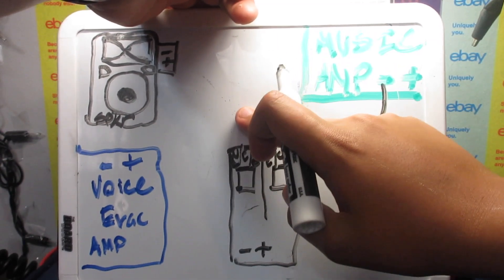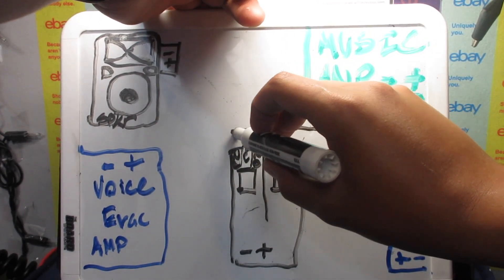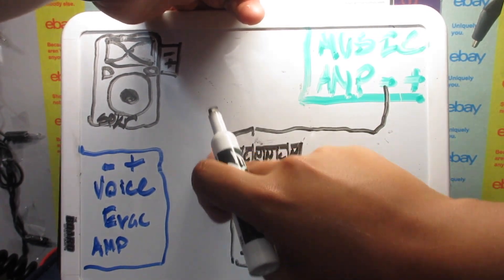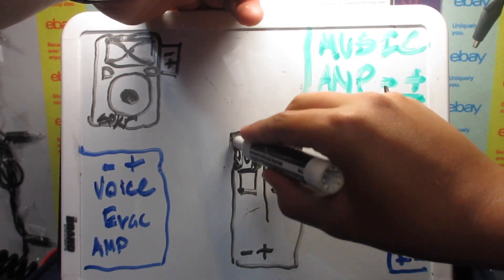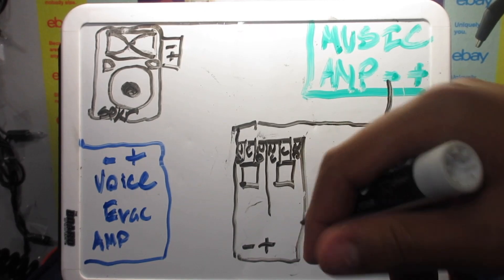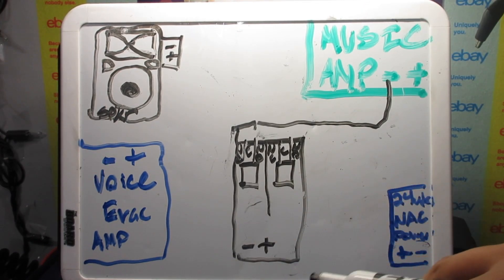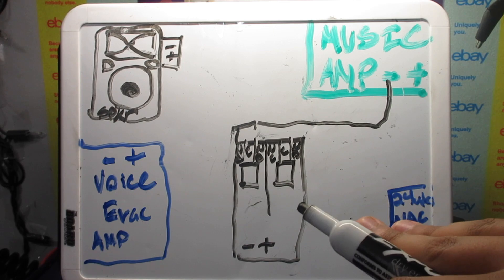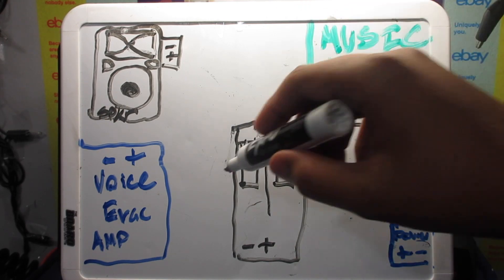Right into—sorry, apologize—it goes into the normally closed terminal if I could draw it into there. Normally closed means that when there's no power applied to the relay, that side will always be making contact.